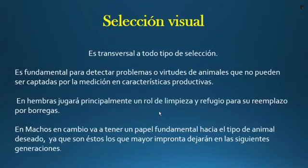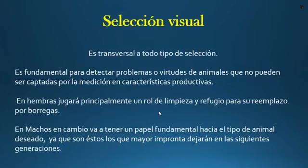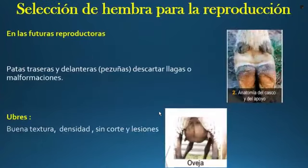Como productor, puedo observar las características de la raza, el medio en que se desarrolla el animal, y físicamente: el color, el pelaje, las extremidades, el lubre, el tamaño de la cabeza, todo lo que se puede observar. En la hembra, esto juega un papel importante porque a través de la selección elegiremos las mejores para hacer el reemplazo de la futura borrega. El macho tiene un papel fundamental hacia el tipo de animal deseado, ya que es el que dejará las siguientes generaciones y transferirá sus genes para lograr el tipo de raza que se desea al final.